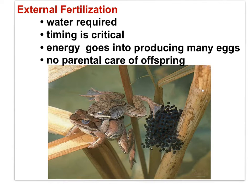External fertilization, seen here with frogs, requires water to sustain the egg and sperm, and it requires proper timing in the release of sperm near the eggs out in the open environment. Once the eggs and sperm are released, there is no further parental involvement. Due to the high vulnerability and loss of eggs, sperm, and embryo, substantial energy is put into building many, many eggs.